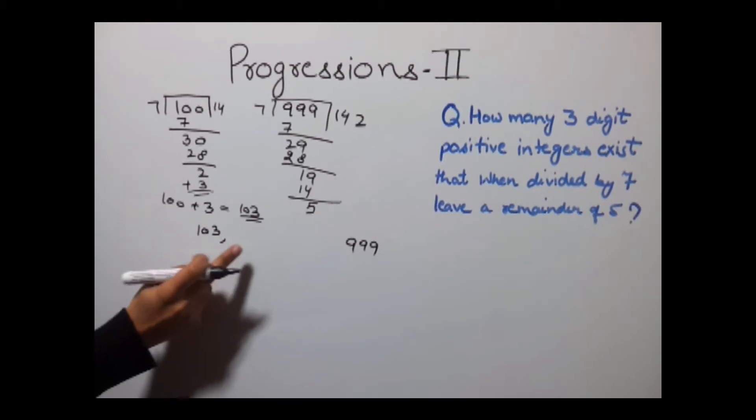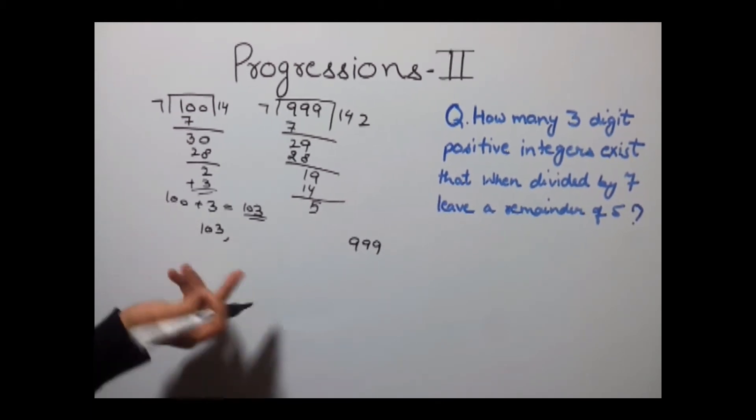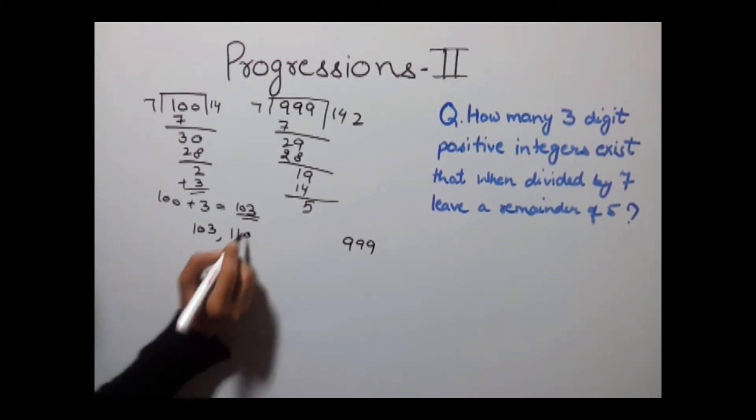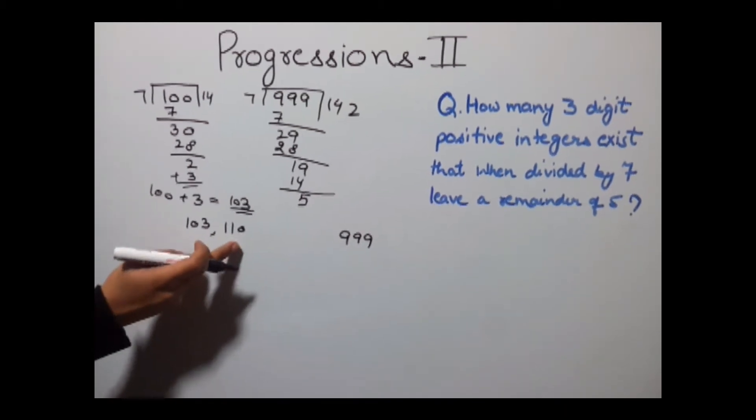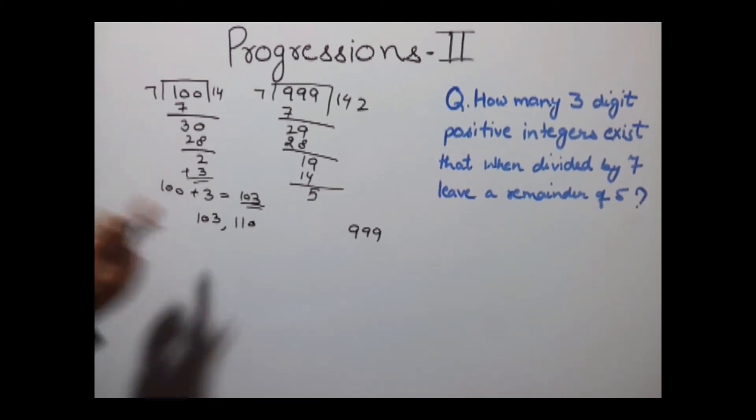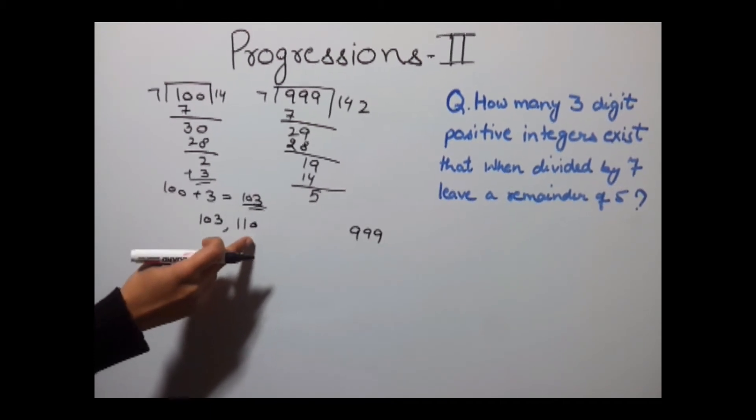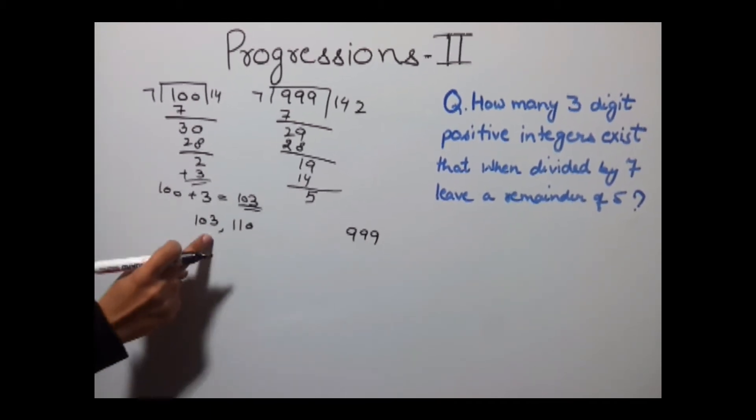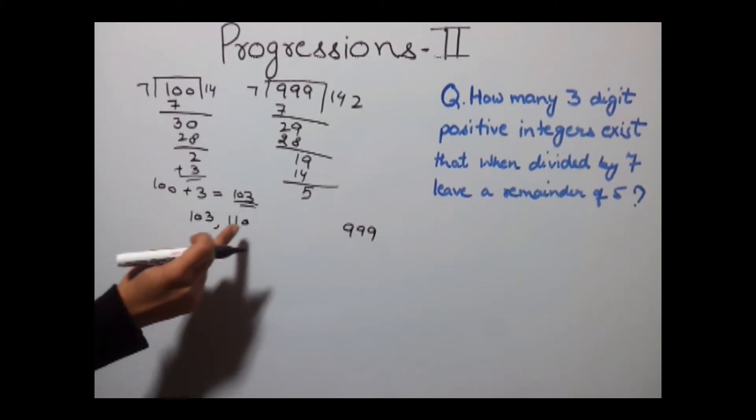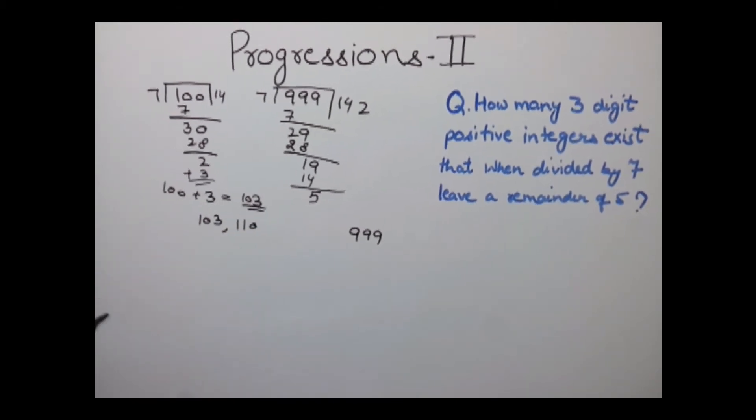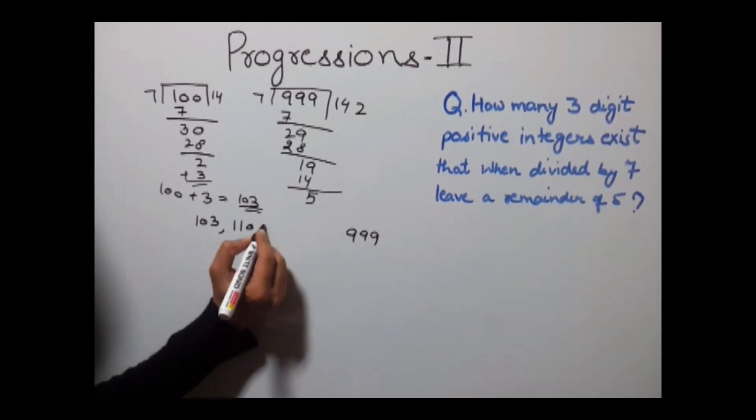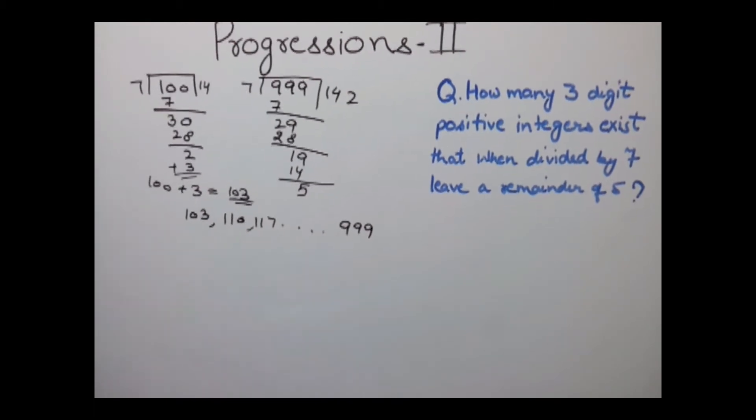Now our next digit would be by adding 7 to this number, which will be 110. We're adding 7 because our next number when divided by 7 will give us a remainder of 5. Similarly, adding 7 to the numbers will form an AP: 117 and so on.